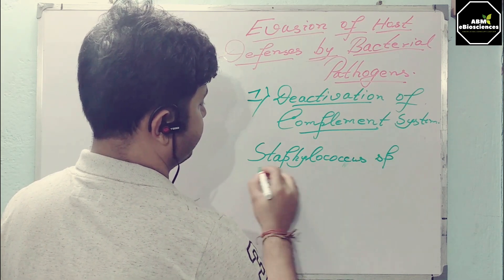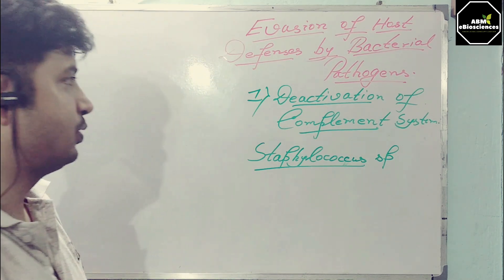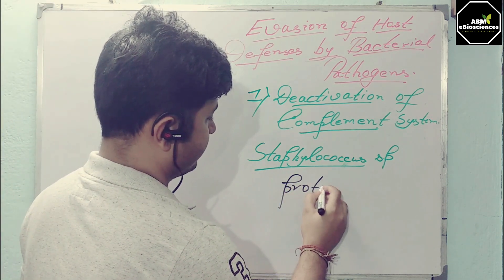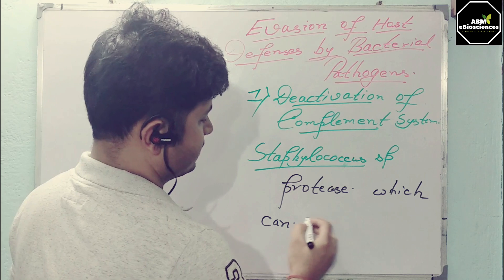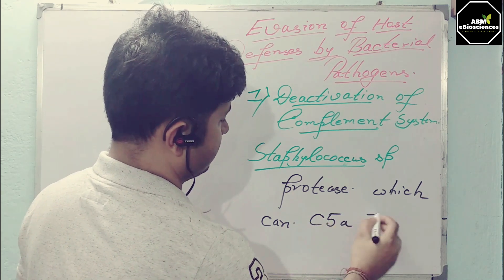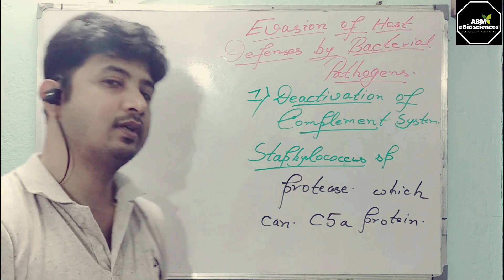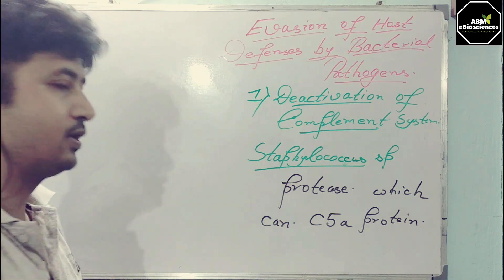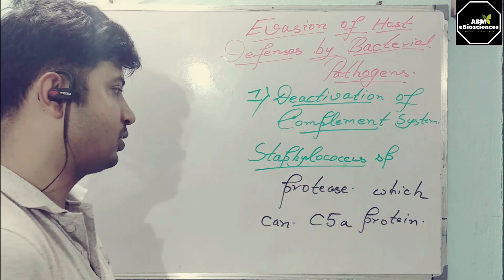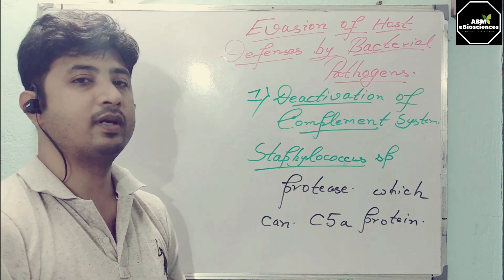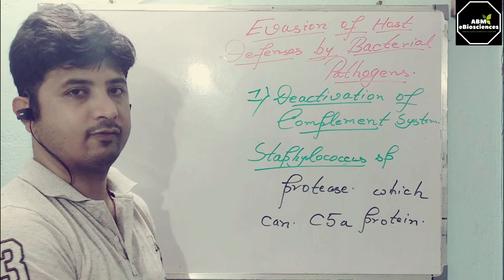For example, Staphylococcus sp. — not all species, but there are some species which produce a protease that can lyse the C5a protein of the complement system. That C5a protein is broken down by proteases secreted by the species of Staphylococcus. That's why the complement fixation or the membrane attack complex never forms, and this is the mechanism of evasion for this particular bacteria.